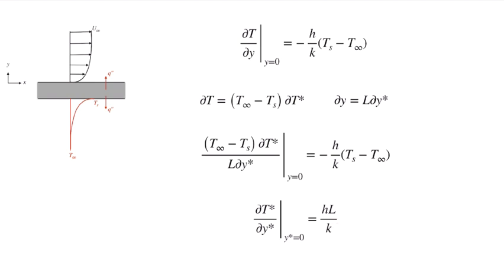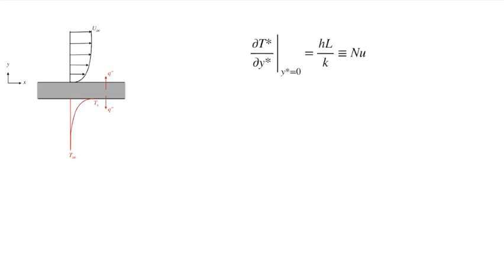You'll notice that hL over k is a dimensionless quantity — a non-dimensional number that we call the Nusselt number. This Nusselt number hL over k represents the non-dimensional temperature gradient at the wall, which characterizes the heat transfer at that location.